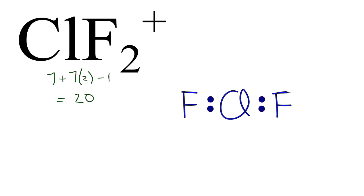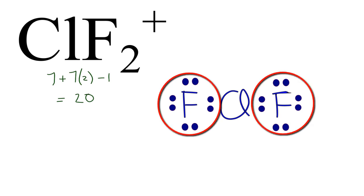Now we'll go around and complete the octets on the fluorine atoms. At this point we've used 16 valence electrons and we've completed the octets on the fluorine atoms.